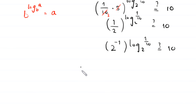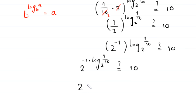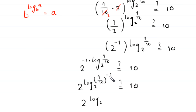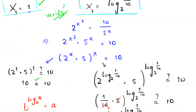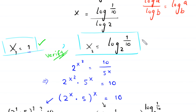This becomes 2 to the power negative 1 times log base 2 of 1 over 10, equals 10. Using the log property, this becomes 2 to the power log base 2 of 1 over 10 to the power negative 1, which equals 2 to the power log base 2 of 10. By the inverse property this equals 10, which confirms 10 equals 10. Left hand side equals right hand side, meaning x equals log base 2 of 1 over 10 is also a valid solution.